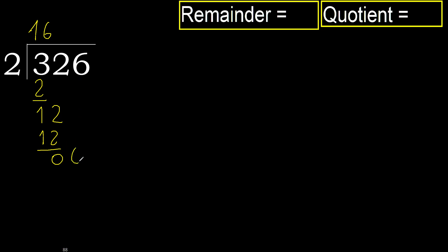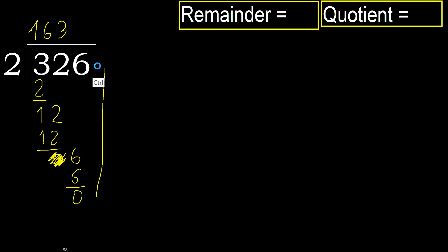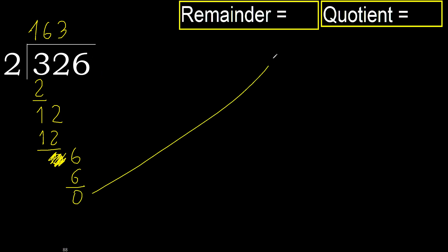Next: eliminate 0 on this side, bring down 6. 2 multiplied by 3 is 6, which is not greater. Subtract. Next: that is not a number, therefore finish it.